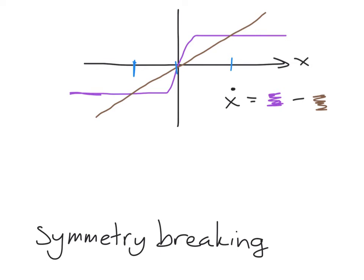I'm going to focus on the pitchfork bifurcation. We talked about the pitchfork bifurcation coming about in the case where a system has some kind of symmetry, and I want to talk about what happens if the system is pretty much symmetric but there's some slight imperfection in its symmetry. How does the pitchfork bifurcation change in the case where the symmetry is broken? So we call that the case of symmetry breaking.